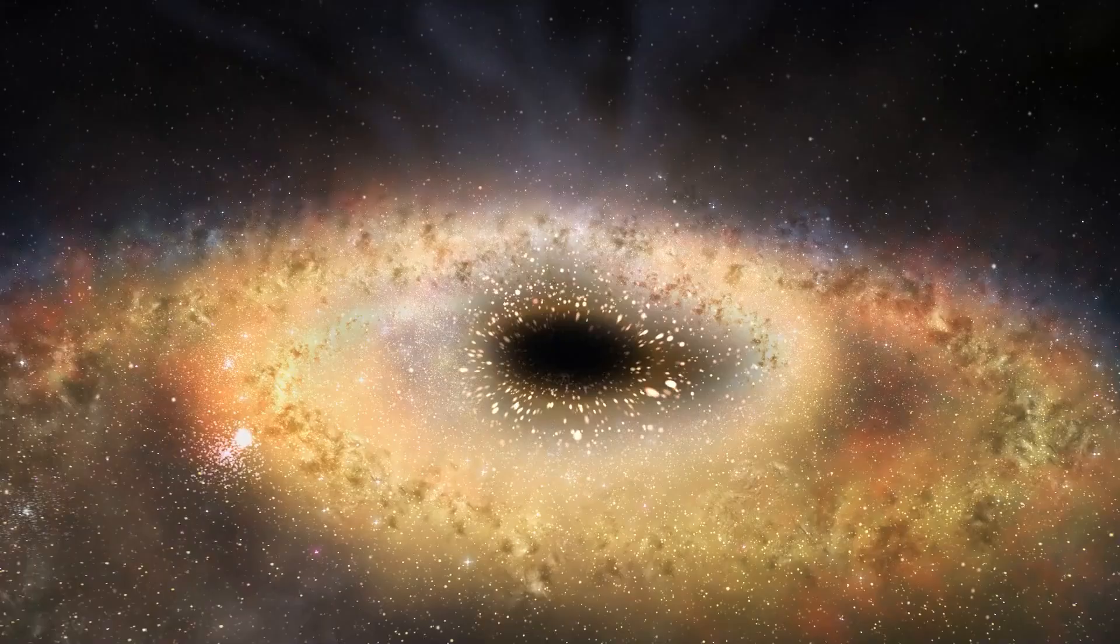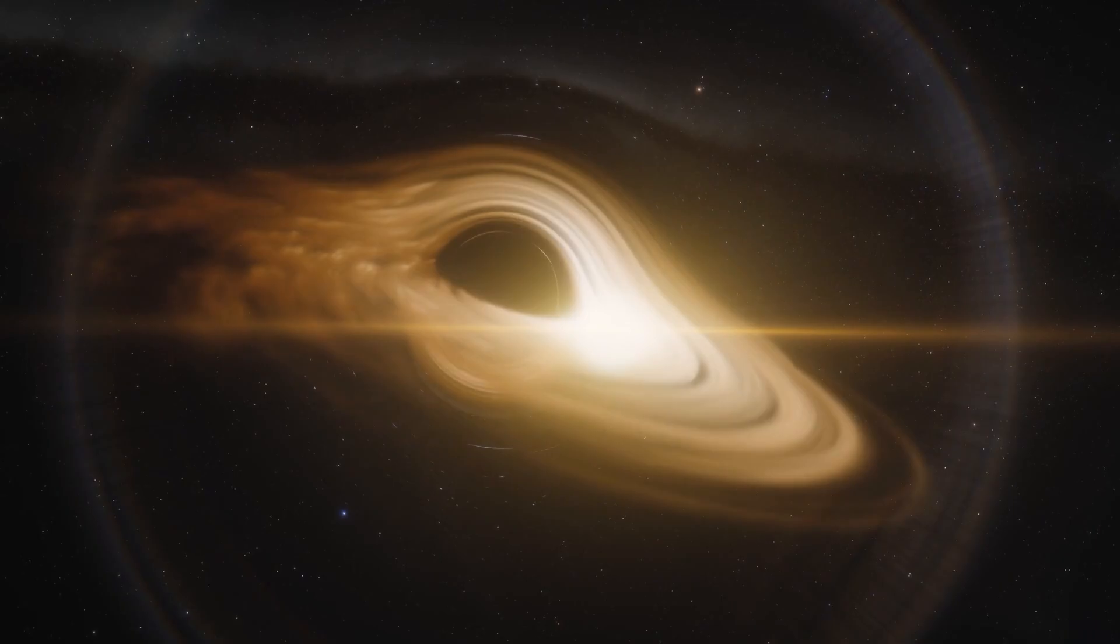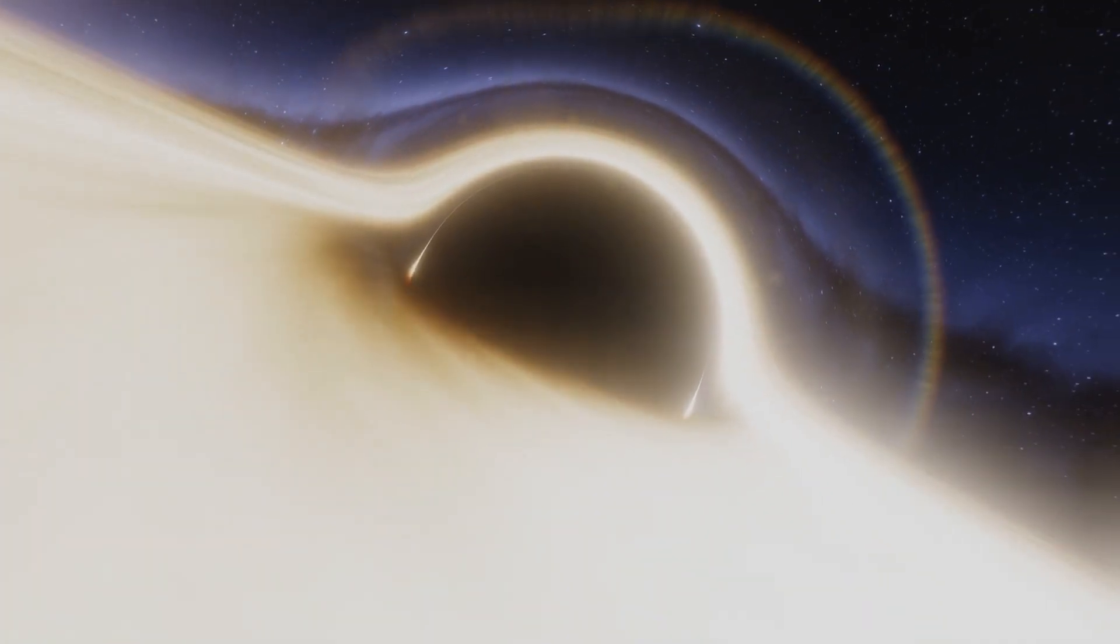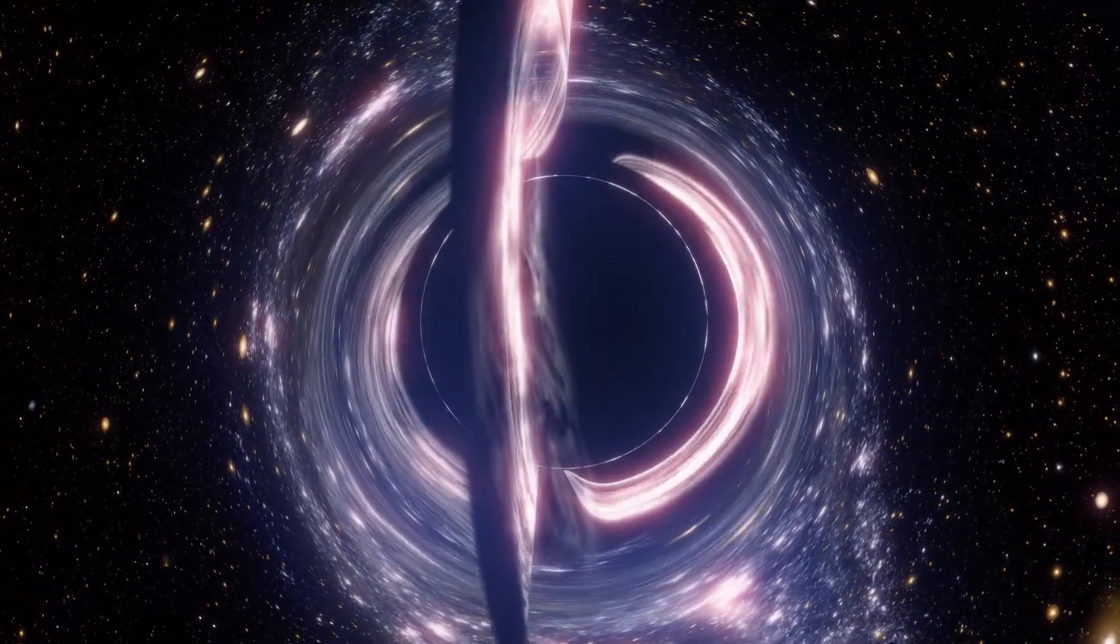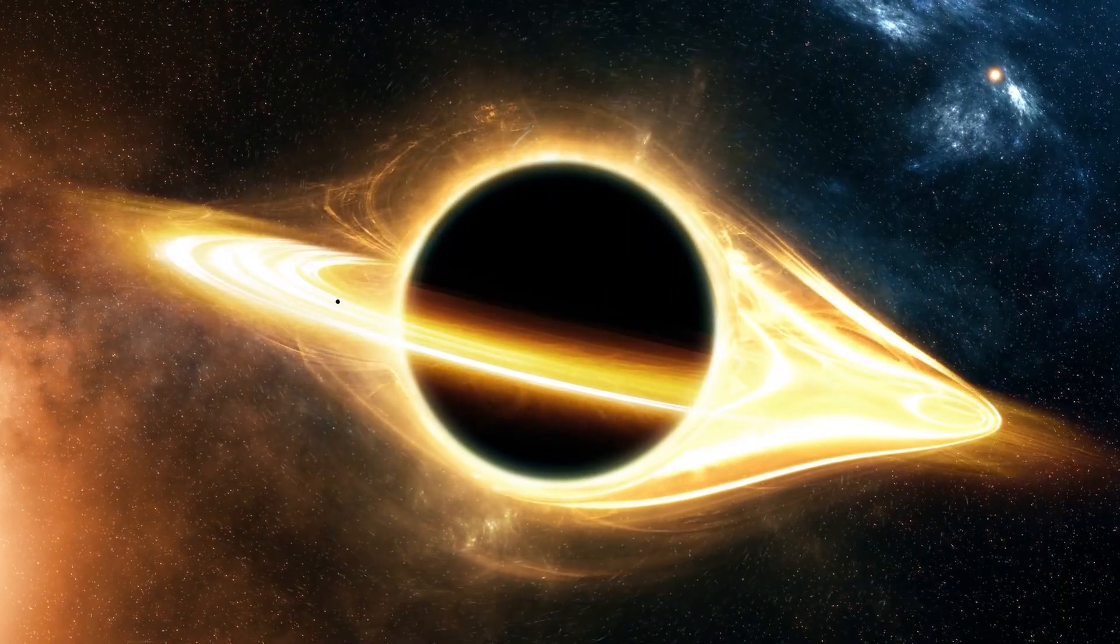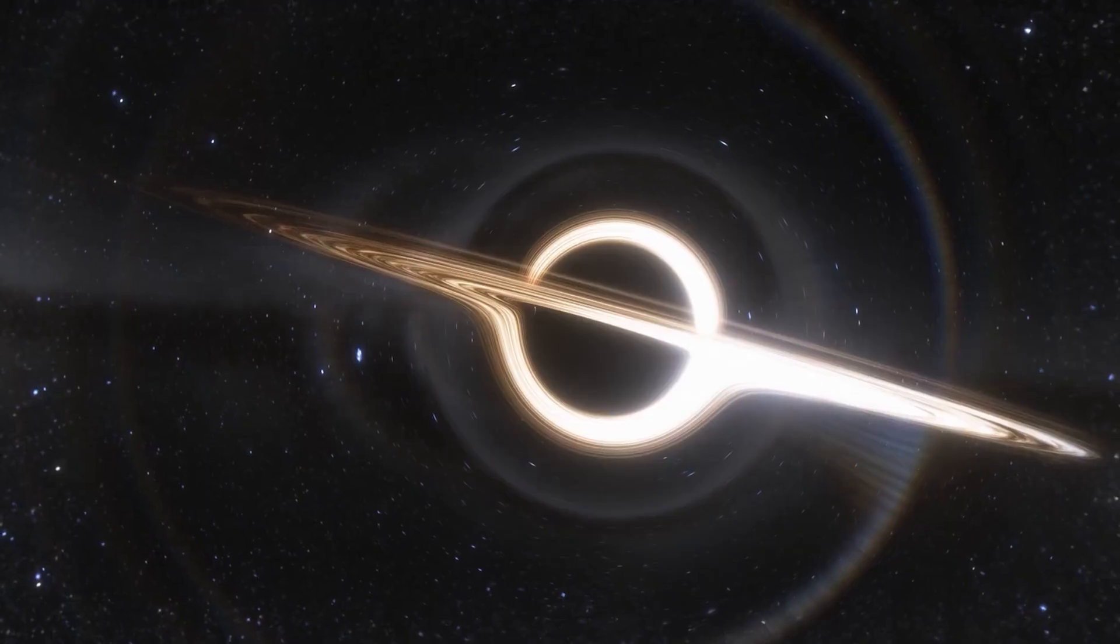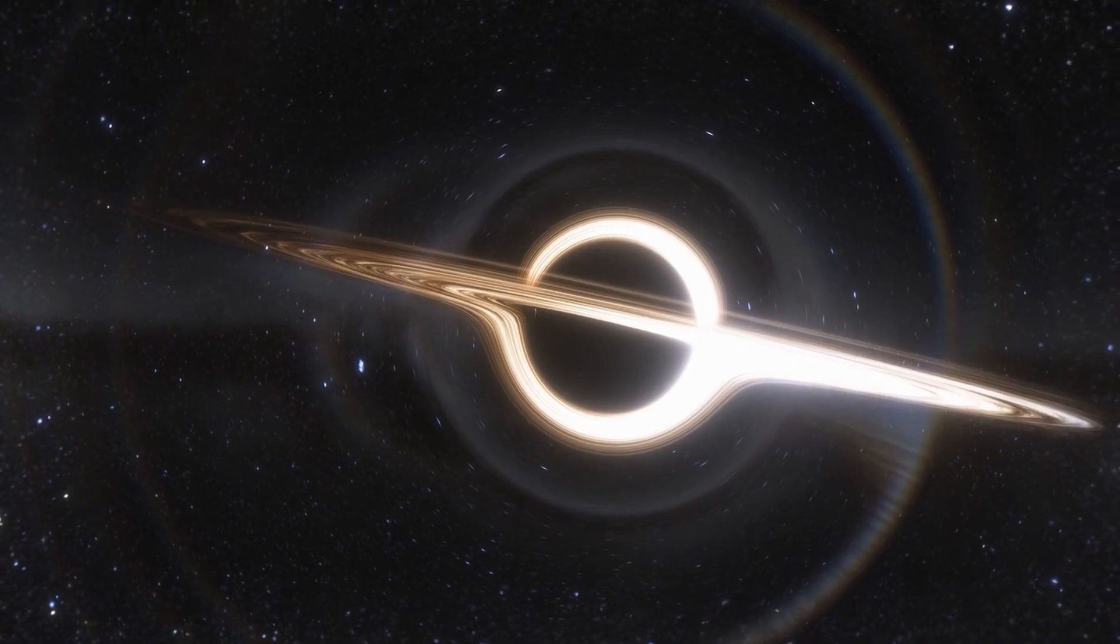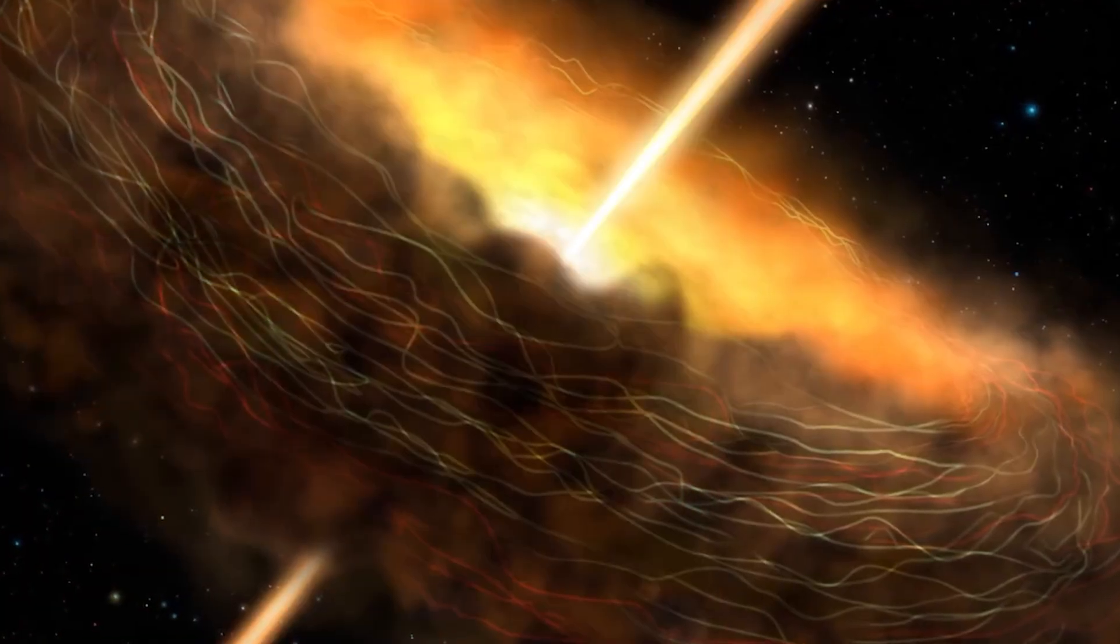To understand why this is such a big deal, we need to look at how black holes normally grow. Usually, they're like cosmic vacuum cleaners, slowly pulling in gas and dust from their surroundings. This material forms a bright, spinning disk around the black hole. Think of it like water spiraling down a drain. As this material falls in, it gets super hot and creates what we call a quasar, one of the brightest objects in the universe.